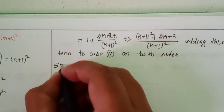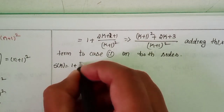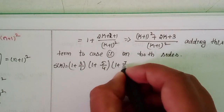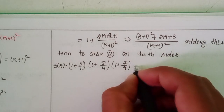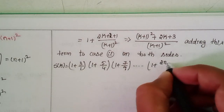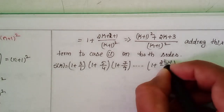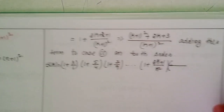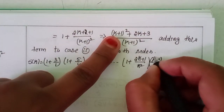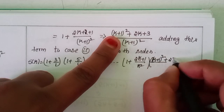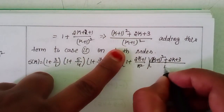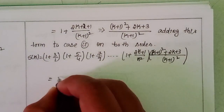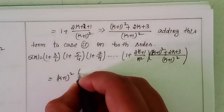Adding this term to Case 2 on both sides, we get S(k) multiplied by the (k+1)th term: (1 + 3/1)(1 + 5/4)···(1 + (2k+1)/k²) × [(k+1)² + (2k+3)]/(k+1)² = (k+1)² × [(k+1)² + (2k+3)]/(k+1)².